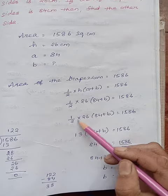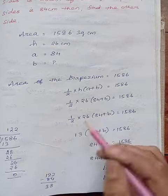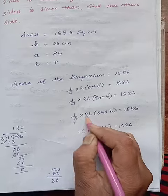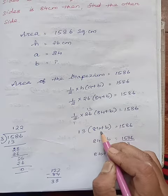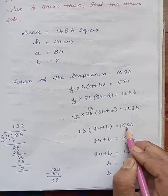So half into 26, we will find if any cancellation is possible. Yes, cancellation is possible. 2 divides 26, 13 times. So 13 into (84+b) equal to 1586.